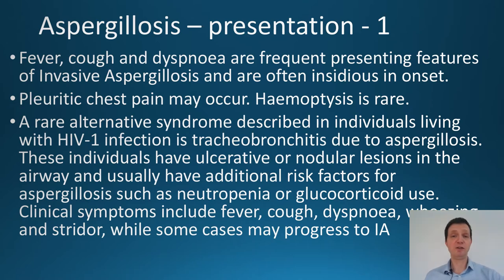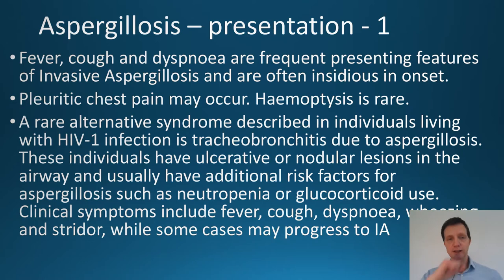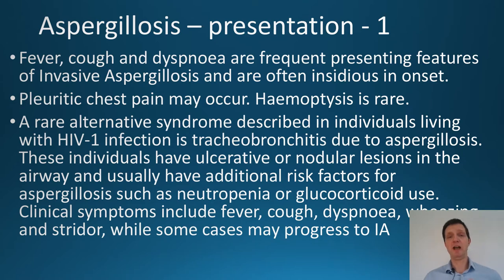Aspergillosis is no different, and it often presents with an insidious onset — in other words, it comes on slowly over time. You can also get pleuritic chest pain and hemoptysis, that is coughing up blood, but that can be quite rare.